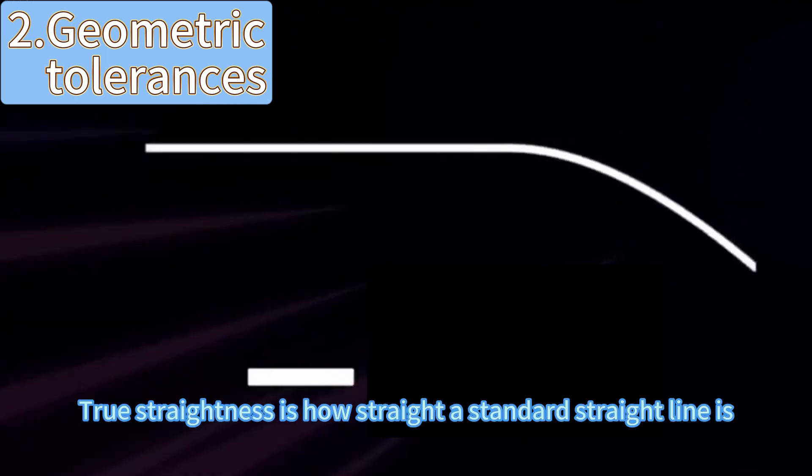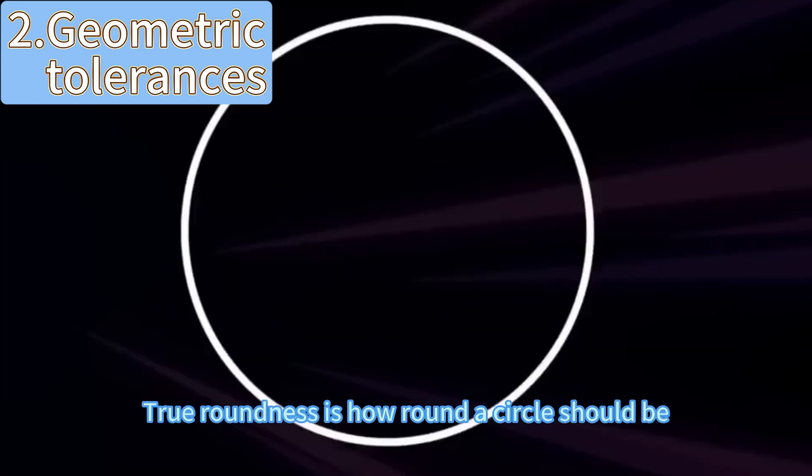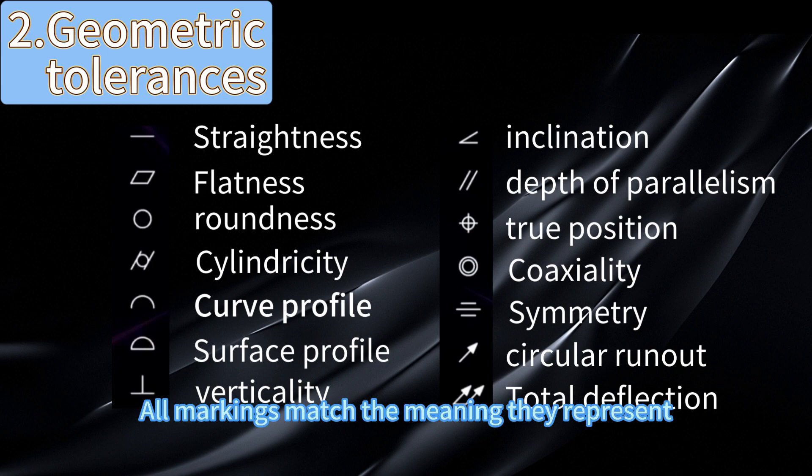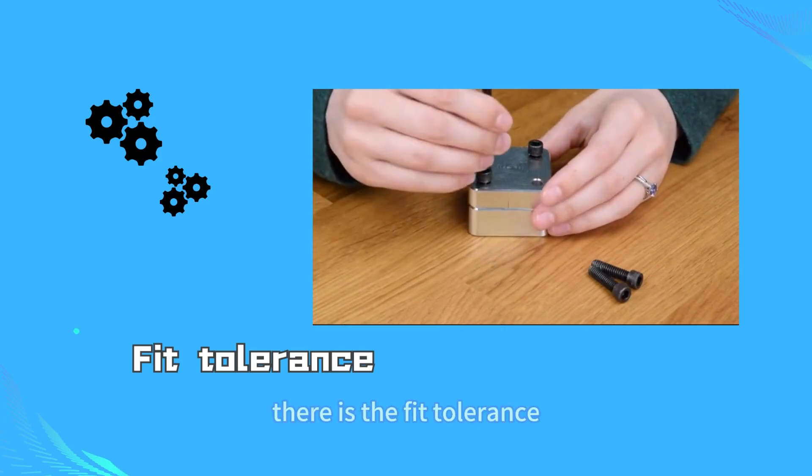True straightness is how straight a standard straight line is, flatness is how flat the standard plane is, true roundness is how round a circle should be. These are basically all markings that match the meaning they represent.